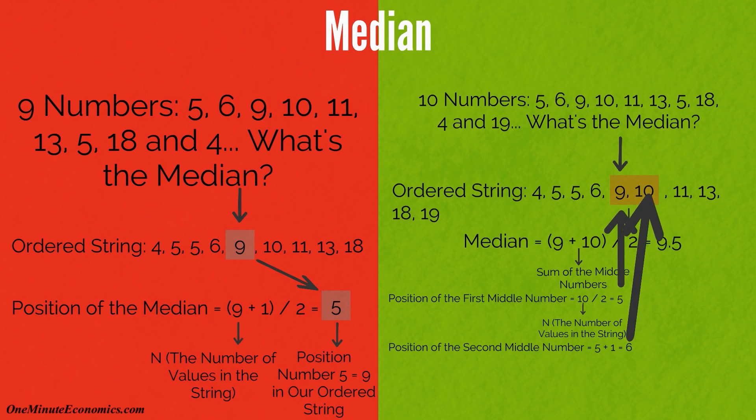In an ordered string of 10 numbers, the median will be the sum between value number 5 and 6 divided by 2.